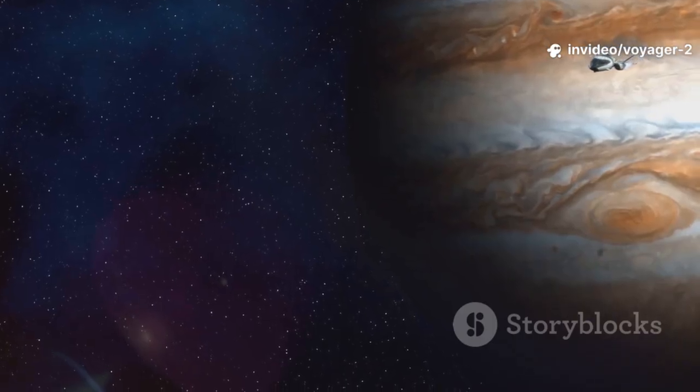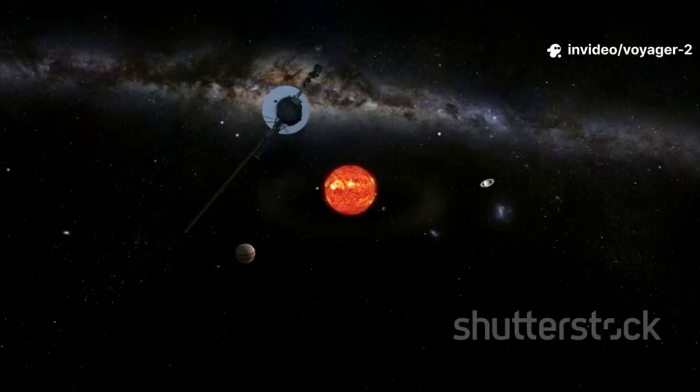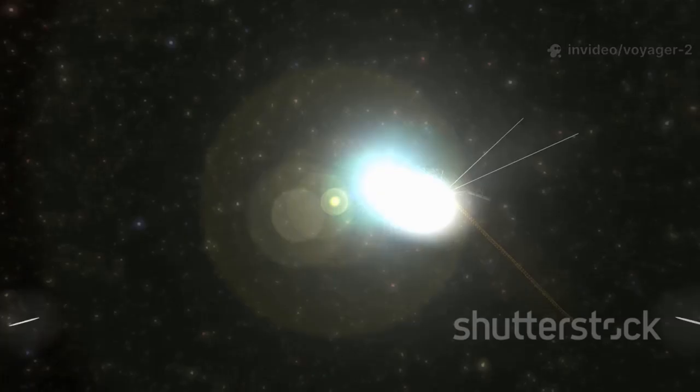After Neptune, Voyager 2's planetary mission ended, but its journey continued. Now, on an escape trajectory, it was bound for the stars. Its new mission: explore the edge of the sun's influence, the heliosphere.